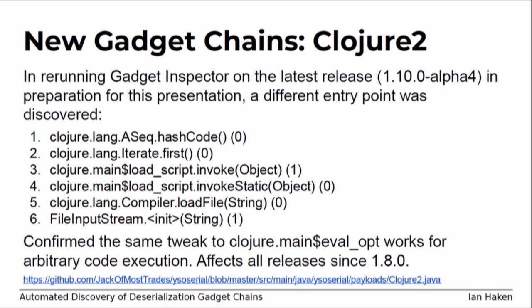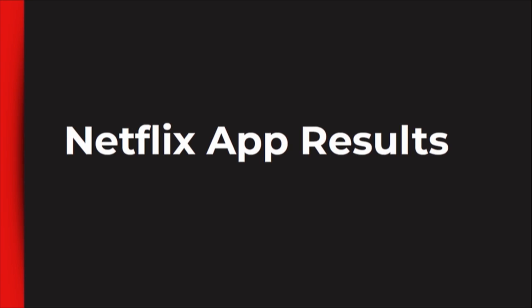Just before this talk, a couple of weeks ago, I re-ran Gadget Inspector on the latest release of Clojure. It turns out that same gadget chain I found before still exists in Clojure, just with a different entry point — another class implementing hashCode that delegates to a function. So you can do exactly the same gadget chain using this different entry point, and it's been in every release since 1.8.0. There's still an RCE gadget chain in every release of Clojure that's out there — I need to follow up with the Clojure team. This really hammers home the point: you've got to stop doing unsafe deserialization.